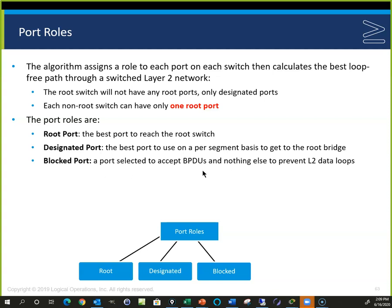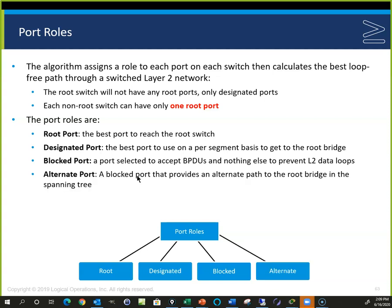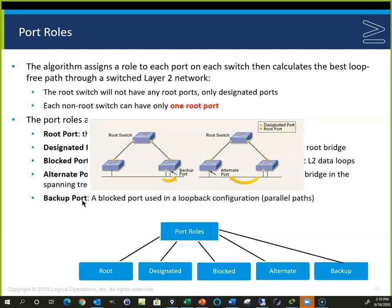The alternate port is a new term — a blocked port that provides an alternate path to the root bridge in spanning tree. The backup port is used in loop-back or parallel path configurations where two ports go to the same location. The one with the lower bridge ID or lower port ID (default priority 128) wins. Here we have alternate ports showing two different switches with an alternate path to the destination.